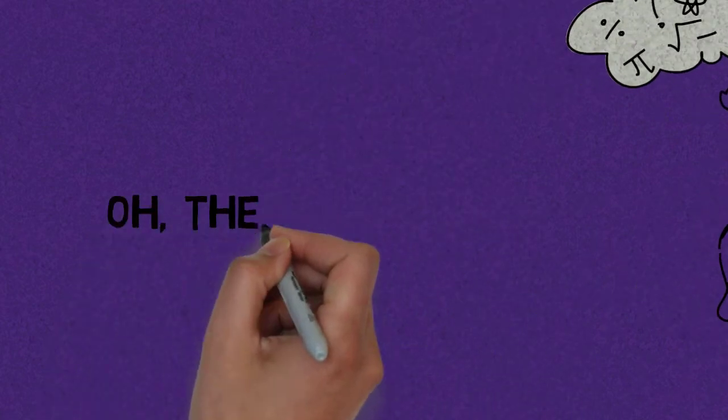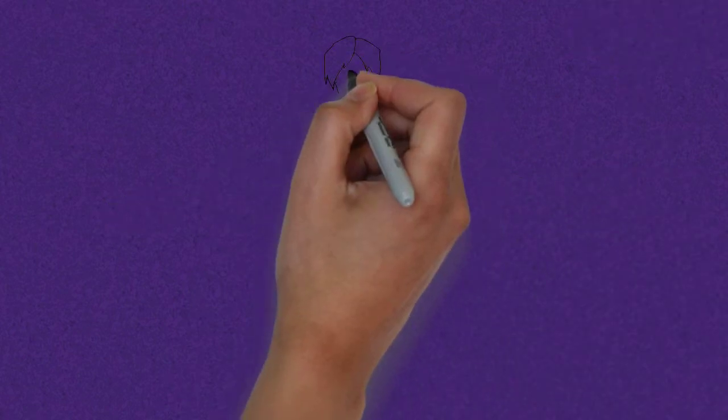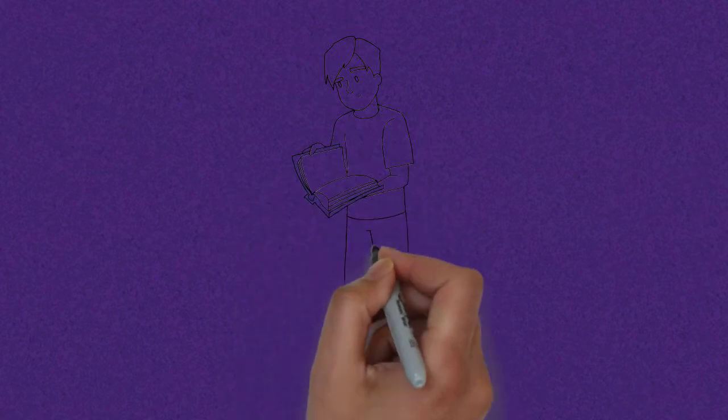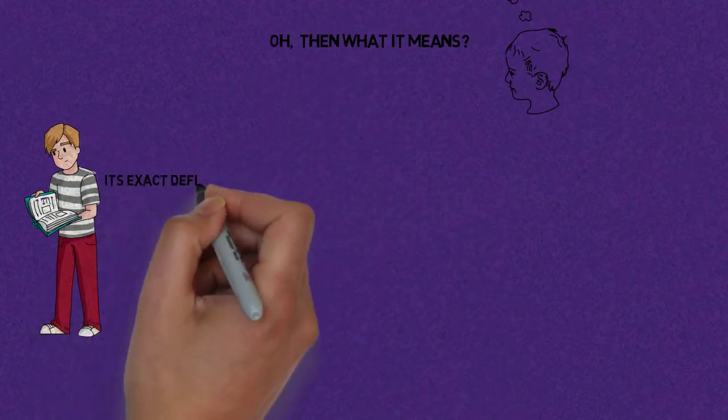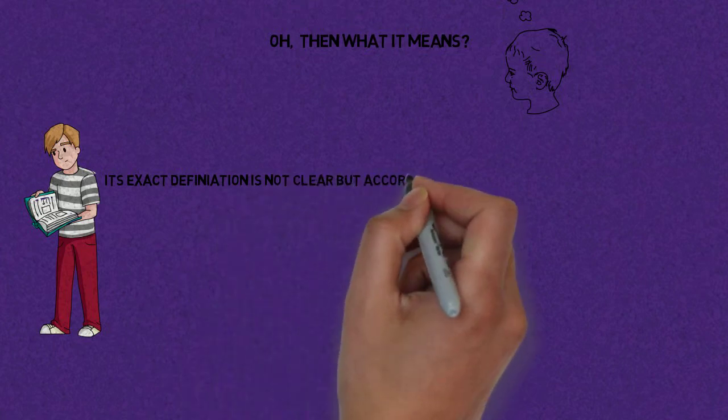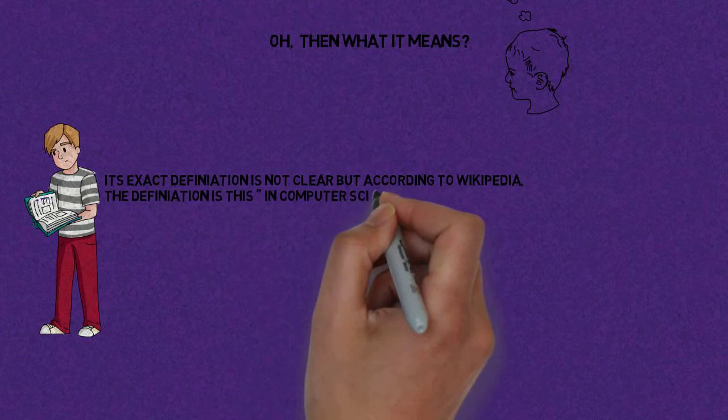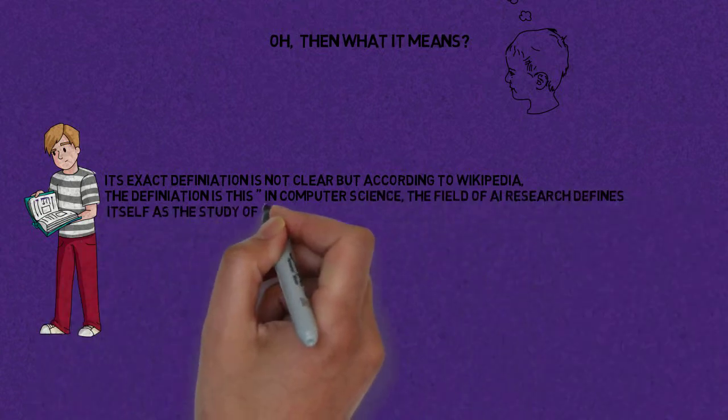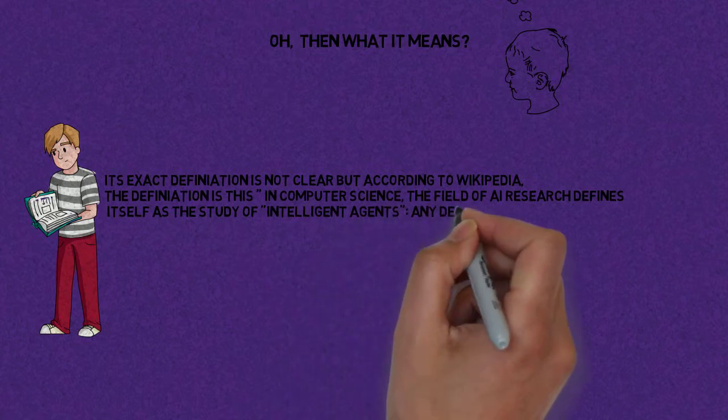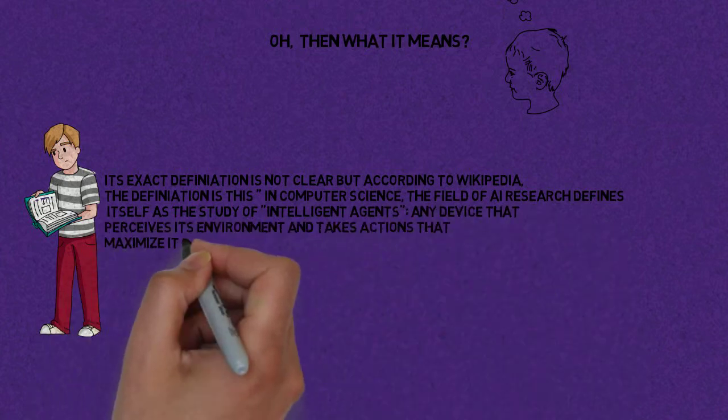Oh, then what does it mean? Its exact definition is not clear, but according to Wikipedia, in computer science, the field of AI research defines itself as the study of intelligent agents - any device that perceives its environment and takes actions that maximize its chance of success at some goal.